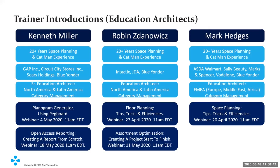Quick trainer introductions: my name is Kenny Miller, one of JDA's category management trainers, along with Robin Zandanowicz and Mark Hedges. Robin and I lead up the training for Catman within the Americas, and Mark is over in the UK leading up Catman within the EMEA region. We've already had several webinar sessions — I did one on Planogram Generator using pegboards and sign actions, Robin did one on floor planning tips, tricks, and efficiency and creating assortment optimization projects from start to finish, and Mark did space planning tips, tricks, and efficiencies. Feel free to go back to training.blueyonder.com for those videos.